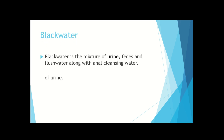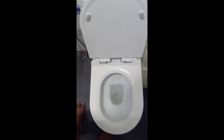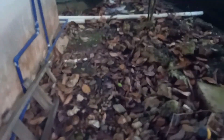Another type of water is black water. Black water is a mixture of urine, feces, and flush water along with anal cleansing water. Black water contains the pathogens of feces and the nutrients of urine that are diluted in the flush water. The waste water will flow from the toilet and go straight to the septic tank that is behind my home. This is where the septic tank stores the waste water.